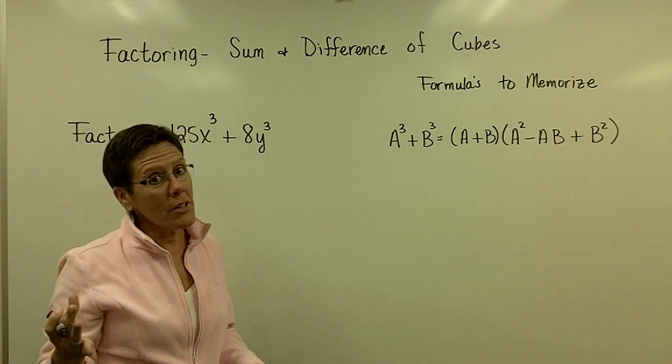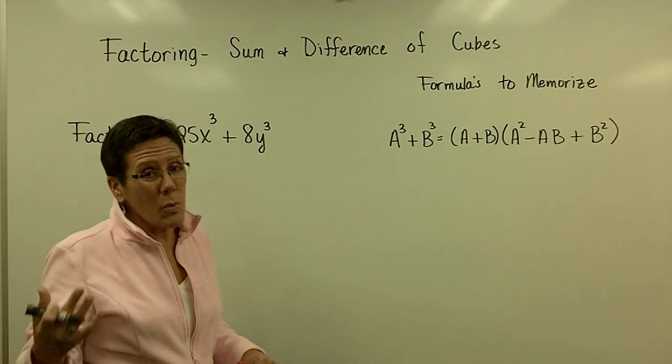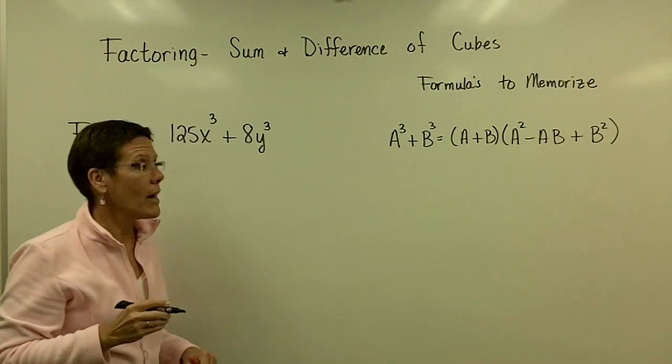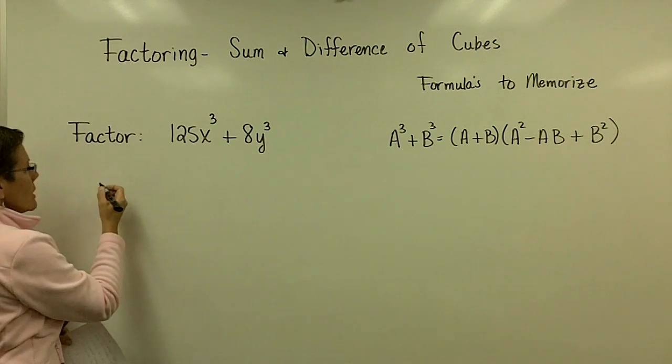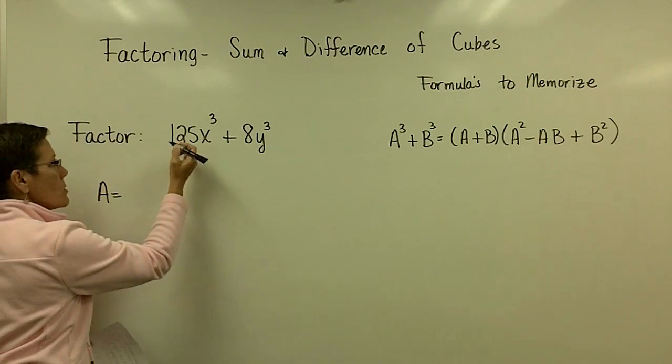So either you use your calculator to find out what the cube root of those values are, or you just recognize that 2 to the third is 8, 5 to the third is 125. But what I need to do is come over here and state what my A value will be.